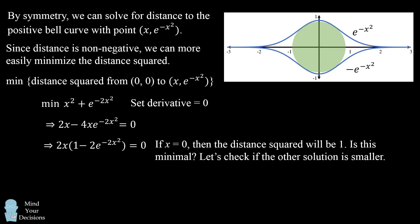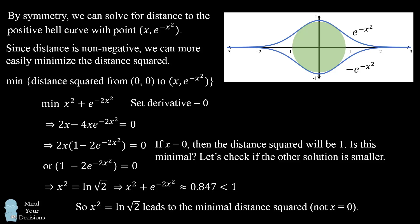Is this the minimal value? Well, let's check if the other solution leads to a smaller distance squared. So we have 1 minus 2 times e to the power of negative 2x squared needs to be equal to zero. We can solve this equation to get x squared is equal to the natural log of square root of 2. If we substitute this back into the distance squared, we end up getting that the distance squared is approximately 0.847, and that's a smaller value than 1. So in fact, this will be the minimal distance squared and this will be the x value that we want. We want x squared equals the natural log of square root of 2.